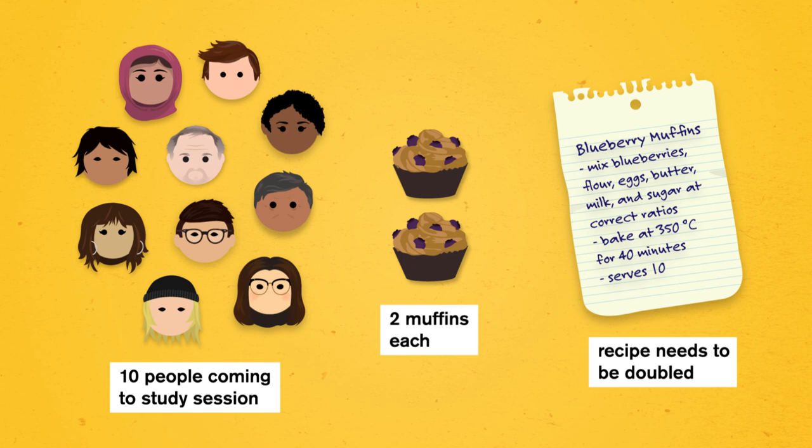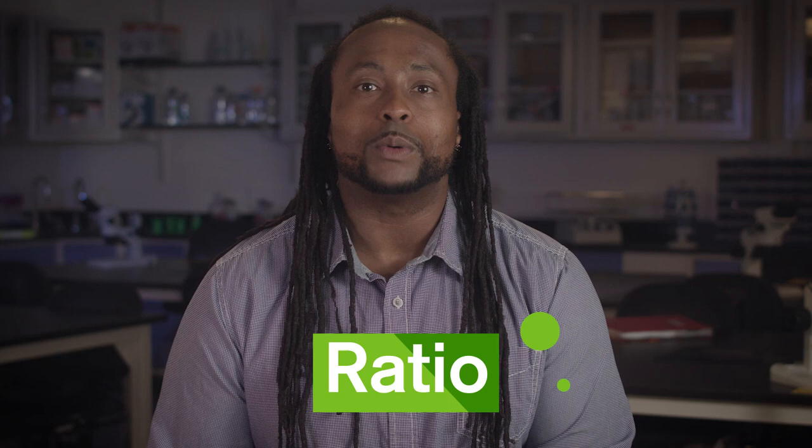But you can't just add more flour or butter or eggs at random. That's because the proportions of ingredients matter. The ratio of eggs to flour to sugar is what makes the difference between a light, fluffy muffin and a dense, chewy lump.